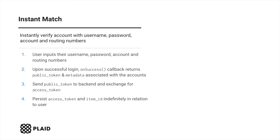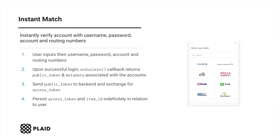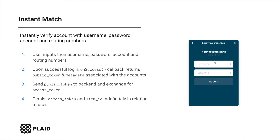Instant match requires users to enter their username, password, and account and routing numbers in PlaidLink to verify their account. In the background, Plaid then matches the user input and authenticates them immediately. Upon the user inputting their information, the on-success callback within PlaidLink will return a public token in addition to metadata associated with their accounts.